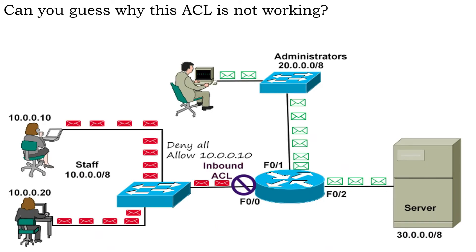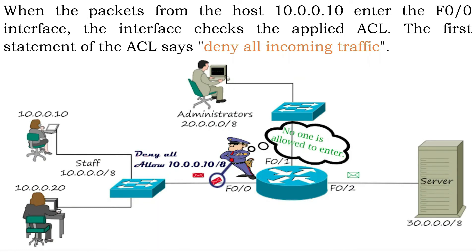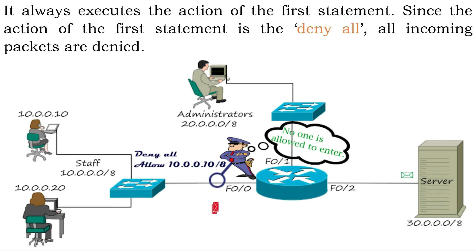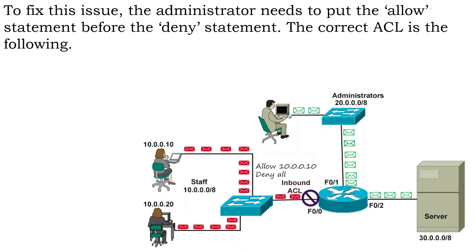Can you guess why this ACL is not working? When the packets from host 10.0.0.10 enter the F0/0 interface, the interface checks the applied ACL. The first statement of the ACL says deny all incoming traffic. Since this criterion matches all incoming packets, the interface never checks the next statement for any incoming packet. It always executes the action of the first statement — since that action is deny all, all incoming packets are denied.